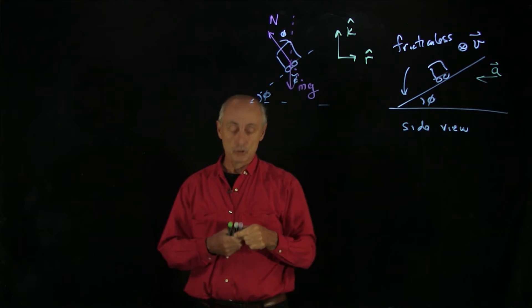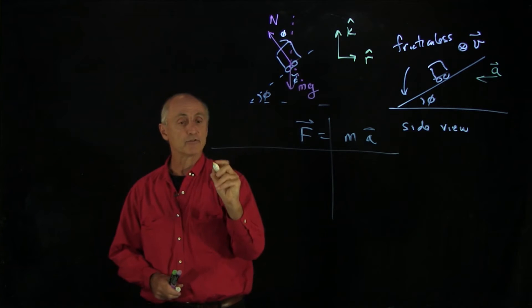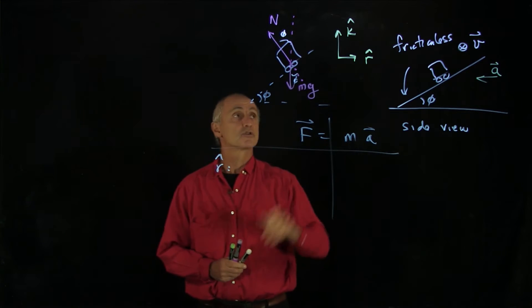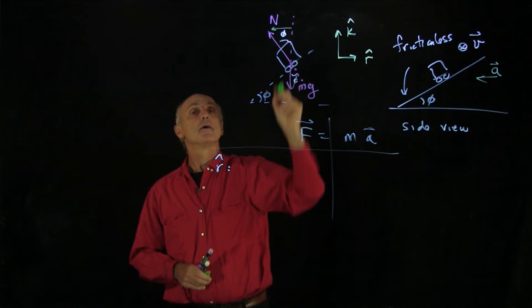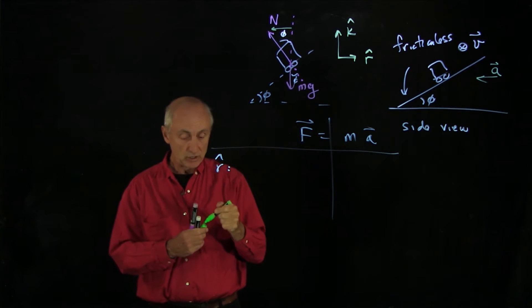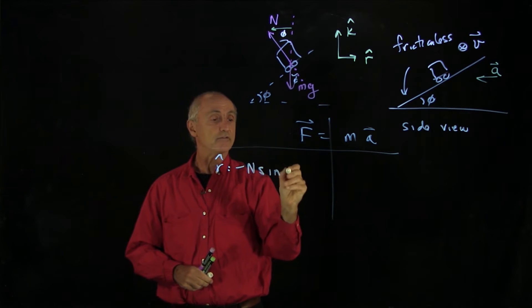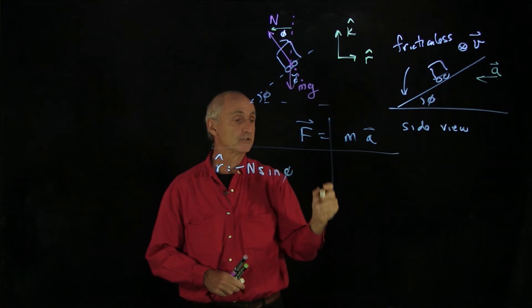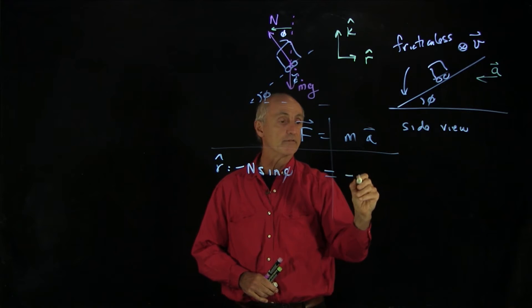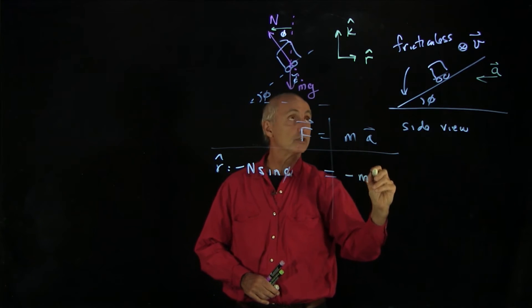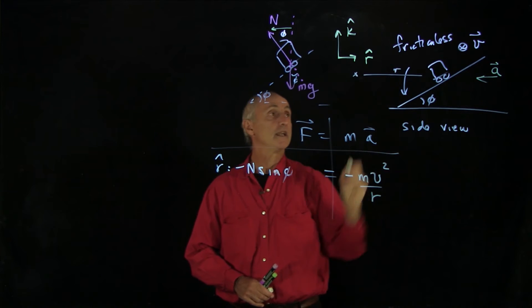Now we can write down Newton's second law. We'll start out with our usual approach, and we have two directions that we have to consider. In the radial direction, there's an inward component of the normal force. That's opposite the angle, so we have minus N sine phi. The gravitational force is only in the negative k hat direction. We know that the acceleration is inward, so there's a minus sign. We have the mass, and the constraint for circular motion is that that's v squared over r, where r was the radius of that circle.